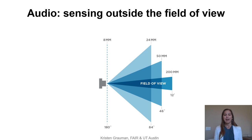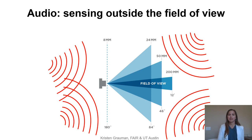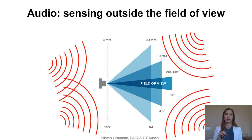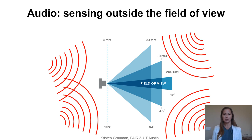So even if we have a narrower field of view camera, the audio signals we receive are from all sides. So we can see in front of us but we can hear all around us. The work I'm going to show you today looks at ways to leverage this link and in fact to get greater spatial description of audio and visual data by looking at them together.